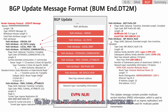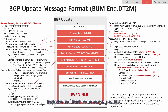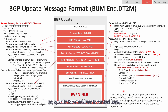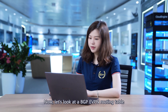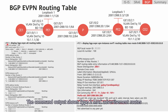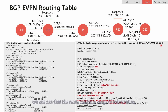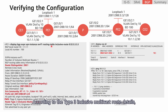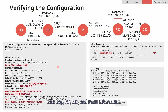The BGP prefix SID attribute carries an End.DT2M SID. The NLRI shows that the route is a Type 3 inclusive multicast route, carrying an RD. Because a broadcast MAC address is used for packet forwarding in BUM scenarios, no specific MAC address is carried. Looking at the BGP EVPN routing table on PE1, the output shows Type 2 MAC advertisement routes and Type 3 inclusive multicast routes. The Type 2 MAC route details carry RD, next hop, RT, SID, and specific MAC address. The Type 3 inclusive multicast route details carry the PMSI attribute in addition to RD, next hop, RT, SID, and PMSI information.